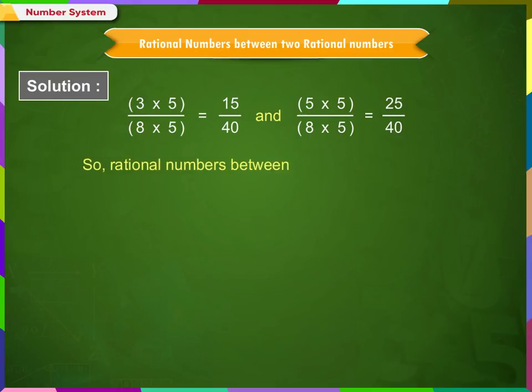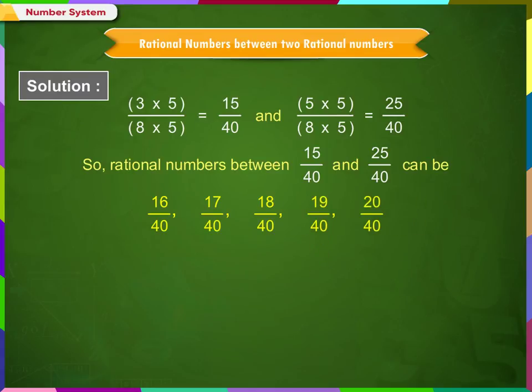So, rational numbers between 15/40 and 25/40 can be 16/40, 17/40, 18/40, 19/40, and 20/40.